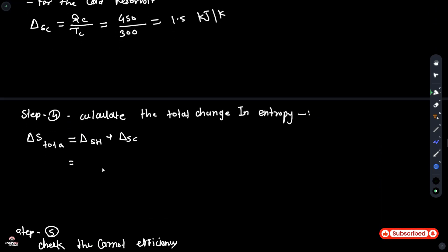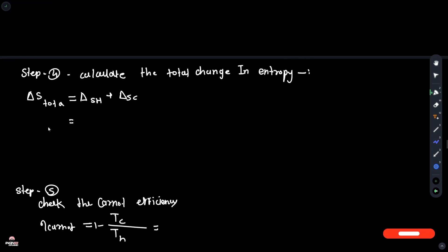Step 4: calculate the total change in entropy. Total change in entropy is equal to the hot reservoir entropy, minus 0.6 kJ per Kelvin, plus the cold reservoir, 1.5 kJ per Kelvin. So total change in entropy is equal to 0.9 kJ per Kelvin.